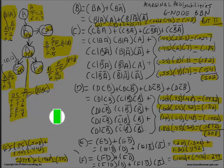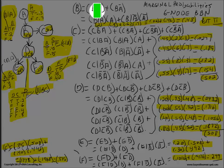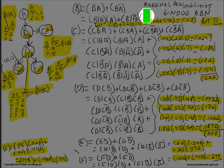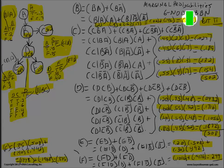So how do I compute these marginal probabilities? I'll start with B. Probability of B equals P(B,A) plus P(B, not-A), and using the chain rule that becomes P(B|A)·P(A) plus P(B|not-A)·P(not-A). P(B|A) is 0.2 and P(A) is 0.3, so 0.2 × 0.3 = 0.06. Then 0.6 × 0.7 = 0.42. Add those together to get 0.48, and this is the marginal probability for B.